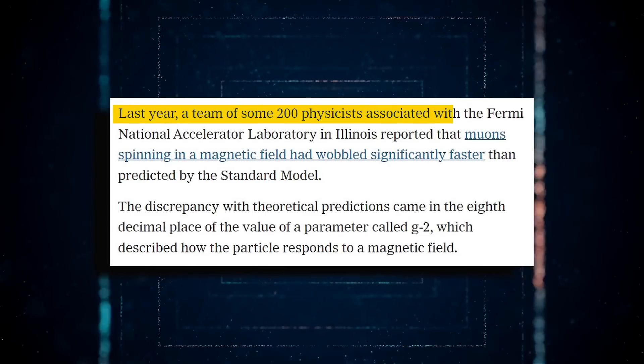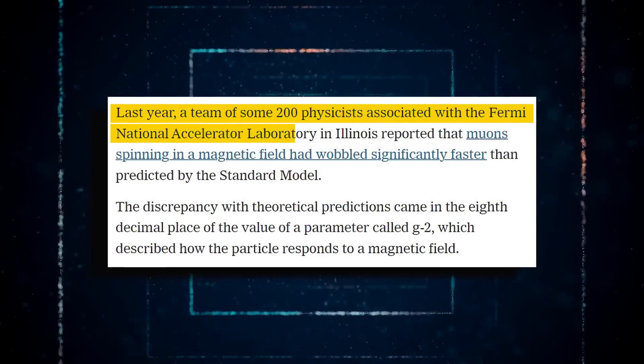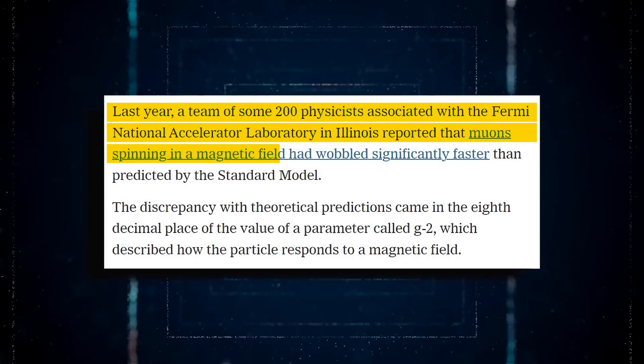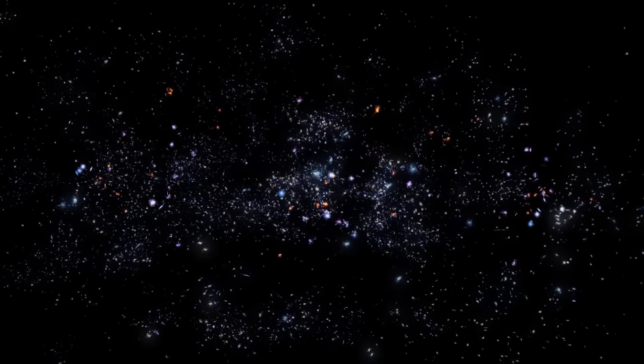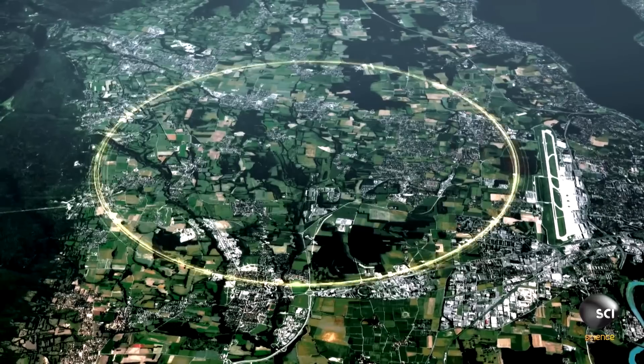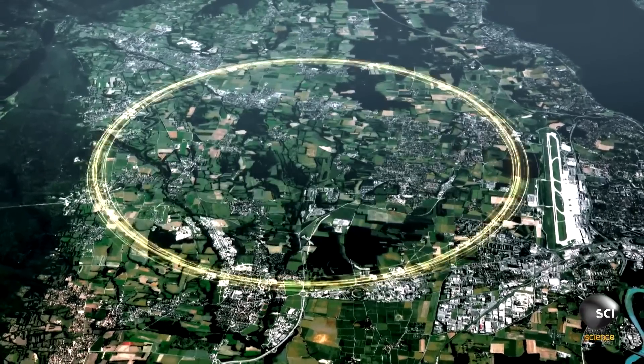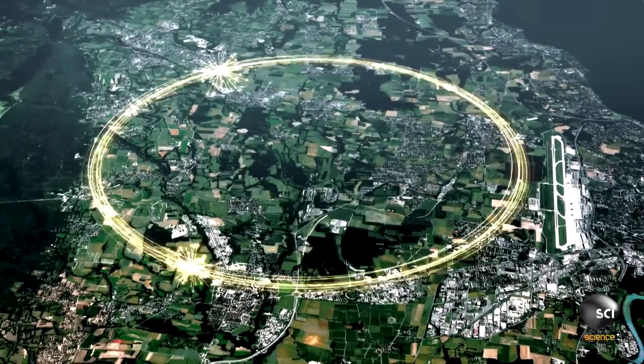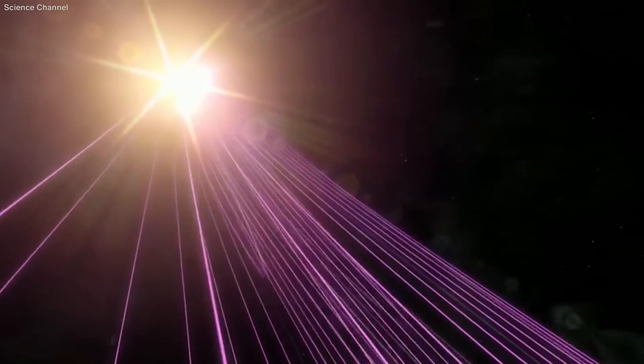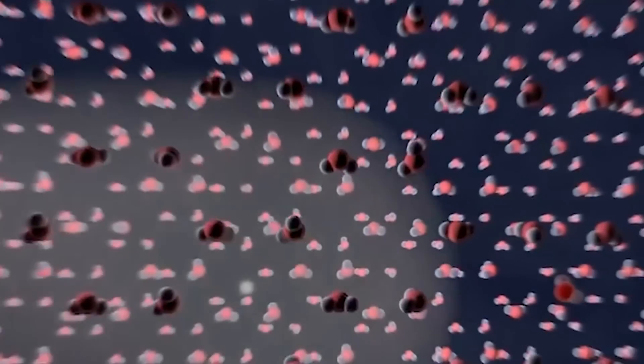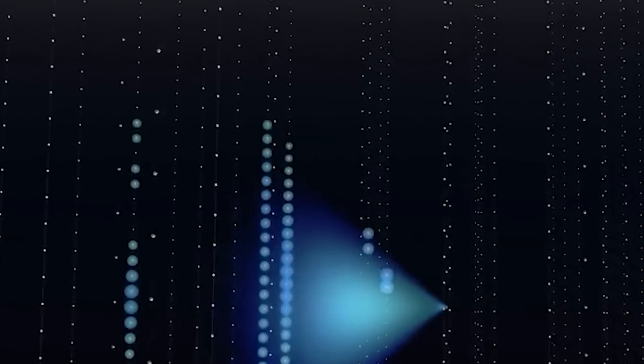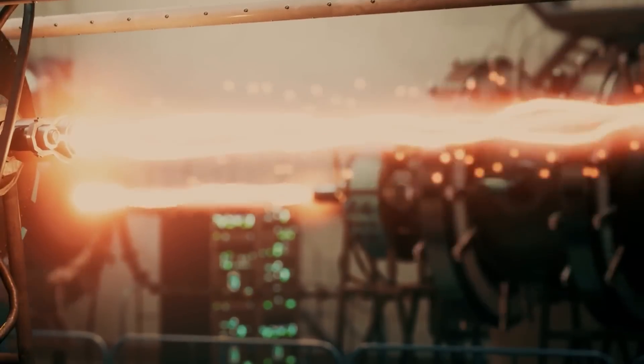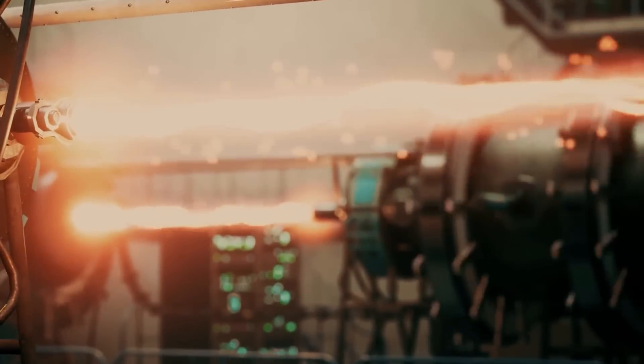Last year, a team of 200 scientists from Illinois' Fermi National Accelerator Laboratory discovered that muons rotating in a magnetic field wobbled more faster than expected by the standard model. The difference between theoretical predictions and experimental results was found at the eighth decimal place of the value of a parameter termed G2, which defined how the particle reacted to a magnetic field. Scientists attributed the fractional but substantial change to the quantum whisper of as-yet-unknown particles that would form briefly surrounding the muon and influence its properties.